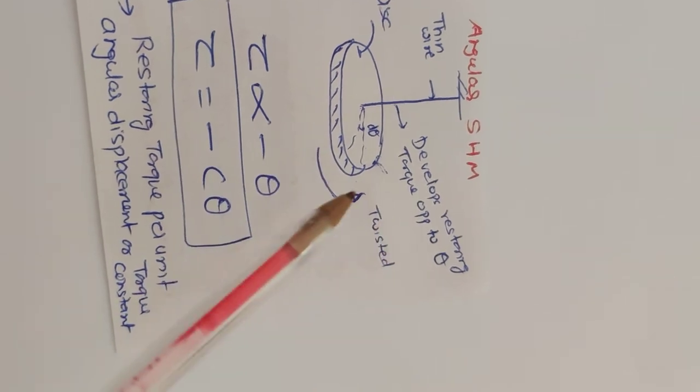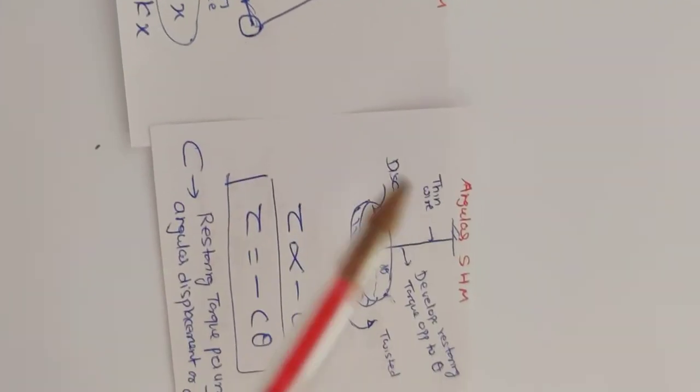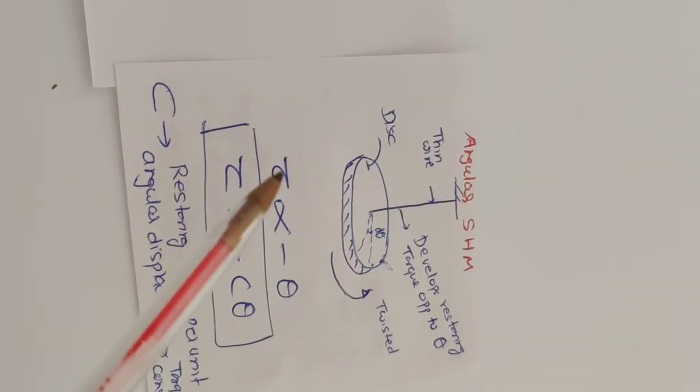So here, partly clockwise, partly anti-clockwise. Here, to and fro repeated type motion. This is because of restoring torque.